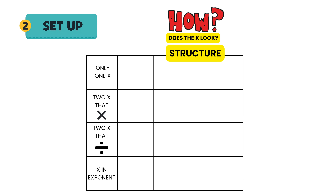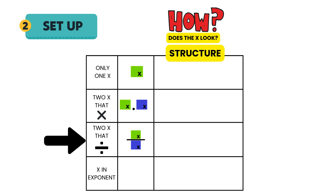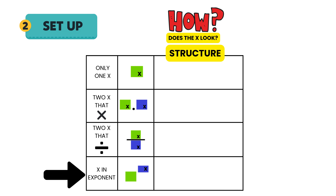The way the x looks in each term determines which structure we're going to use. There are four different ways x can appear: way one, there's only one x; way two, there are two x's being multiplied; way three, there are two x's being divided; and way four, the x is in the exponent.